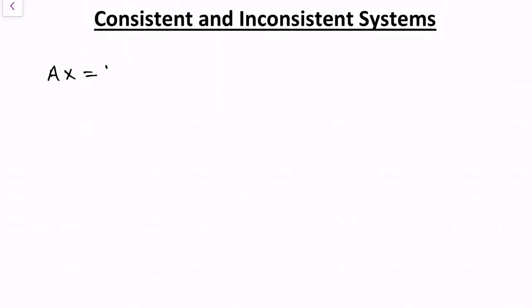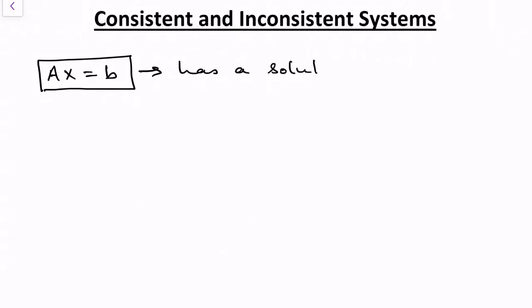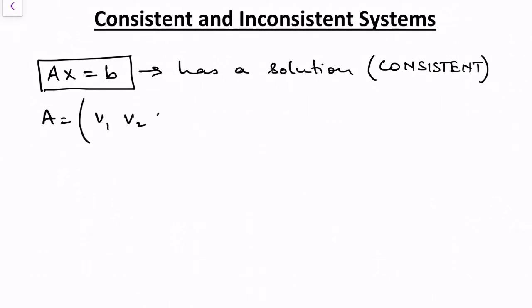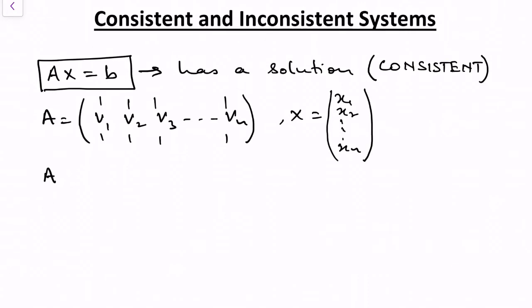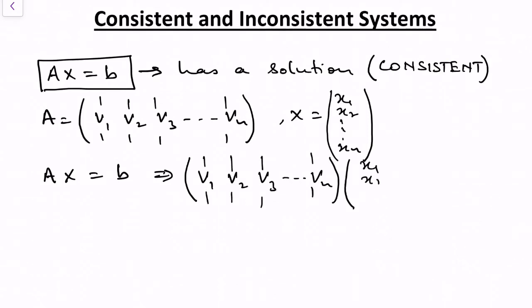A matrix equation has a solution then the system is consistent, where each column of matrix A is a vector. So A equals [v1, v2, v3, ..., vn] and x equals [x1, x2, x3, ..., xn]. So Ax = b will be v1, v2, v3, ..., vn times x1, x2, ..., xn equals b, which means b is in the span of vectors v1, v2, v3, ..., vn.